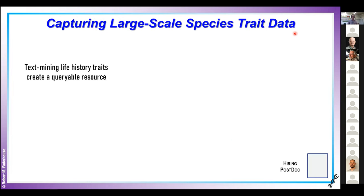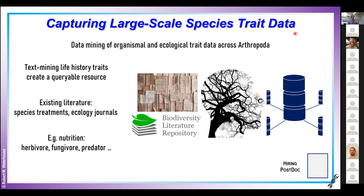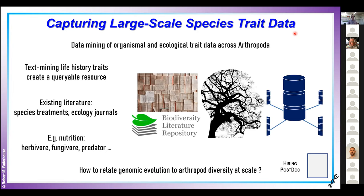Function is also expressed at the level of the organism rather than individual genes. This is a very new project where we're developing text mining approaches for arthropod life history traits, to create a large, comprehensive, and consistent resource of knowledge that's currently trapped in the literature. We're working with collaborators in the text mining field to examine species treatments and specific ecology journals to extract information in a unified manner — for example, what each arthropod species eats — beginning to relate genomic changes to arthropod life history diversity at a much larger scale.